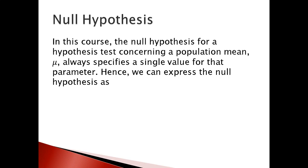For the null hypothesis in this course, when conducting a hypothesis test concerning a population mean, we always deal with the population mean and specify a single value for that parameter. We express the null hypothesis as: H₀ such that μ (population mean) equals some μ₀.